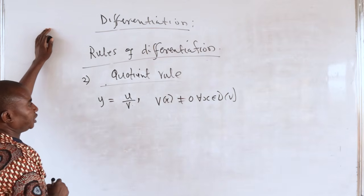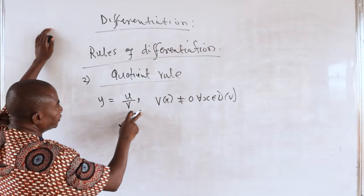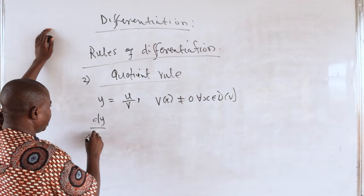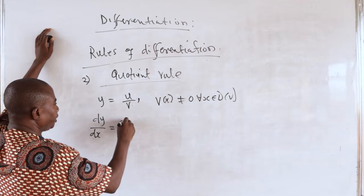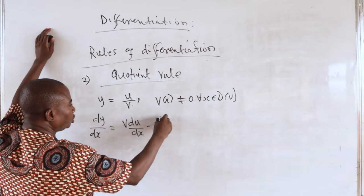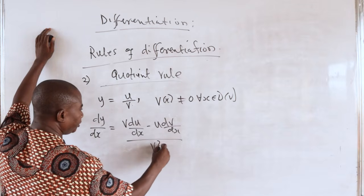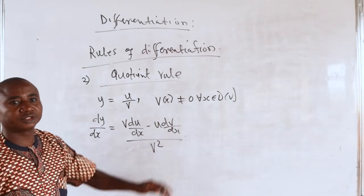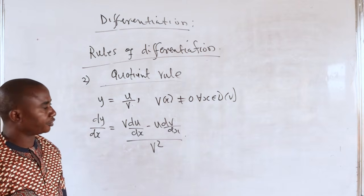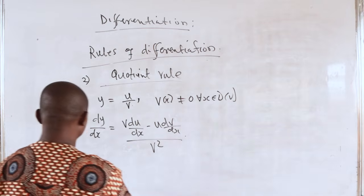Suppose you have a function of this form and want to compute the derivative with respect to x. The quotient rule says that dy/dx is v(du/dx) minus u(dv/dx) divided by v². Once this formula is clear to you, you can always apply it to find derivatives of functions of that nature. Let me take an example.